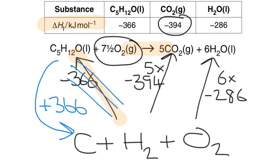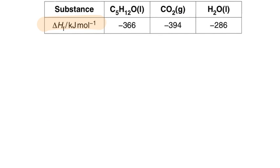All I need to do is, for this alternative route, I add up all the numbers I've currently got written. I'm going to add up the 366, add 5 times minus 394, add 6 times minus 286, because they are my alternative route round to the products, and it gives me my final answer for the question.